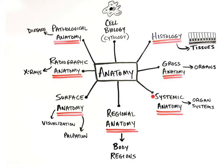Systemic anatomy is the study of the structures of specific organ systems, such as the skeletal or cardiovascular systems. Regional anatomy is the study of specific areas of the body, such as the head or chest. Surface anatomy is the study of the body's surface markings in order to understand internal anatomy. It is assessed through visualization, which is simply looking at the body surface, and palpation, which is touch and feel.